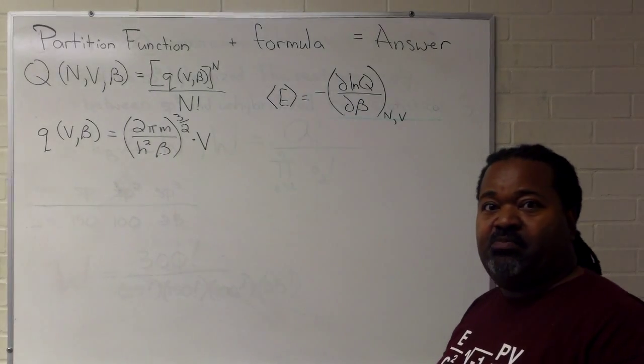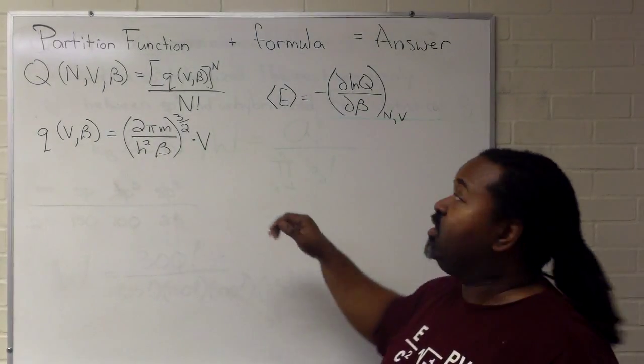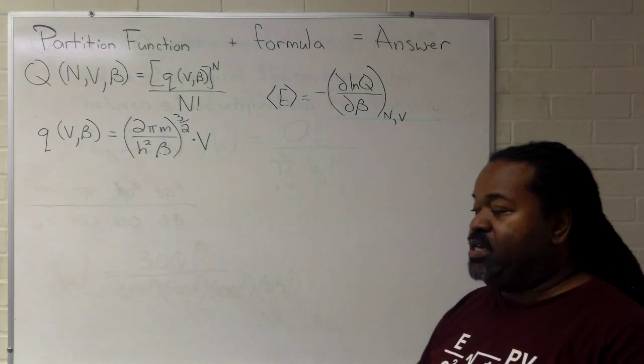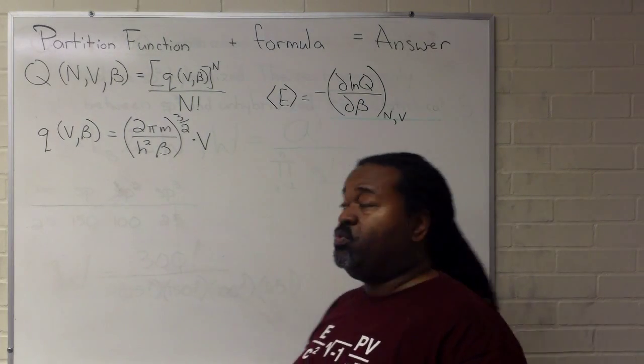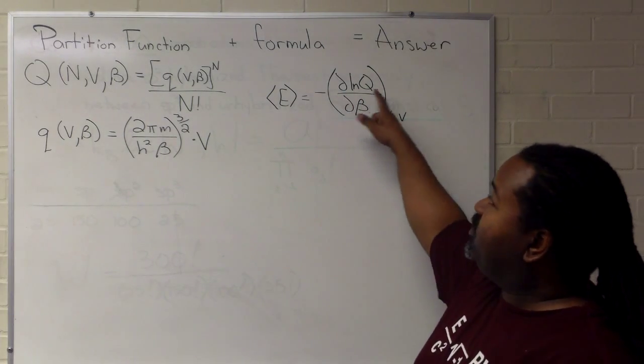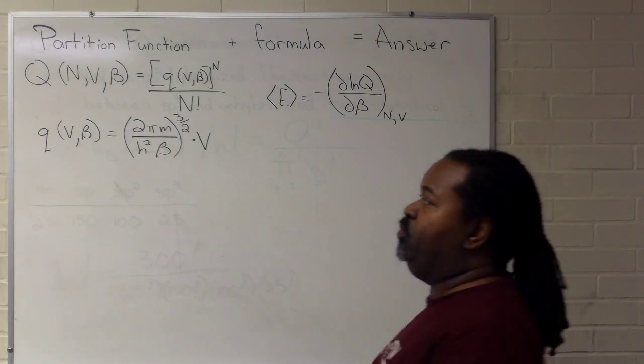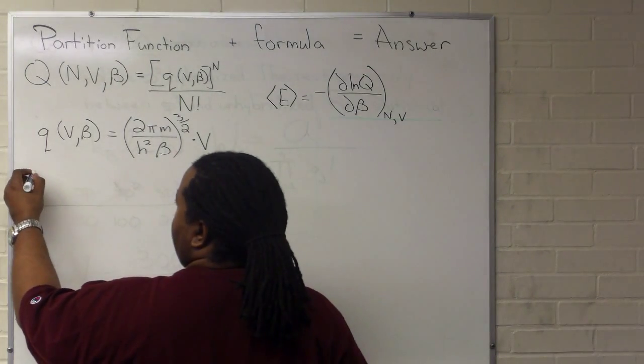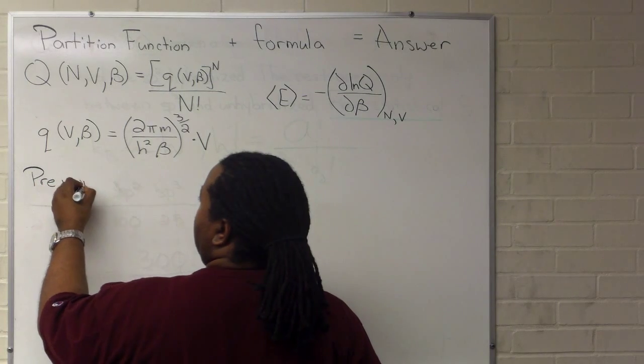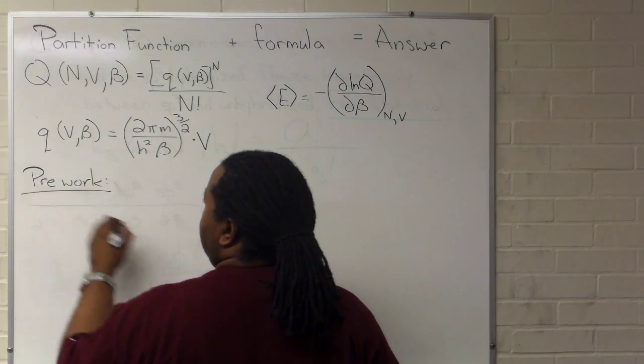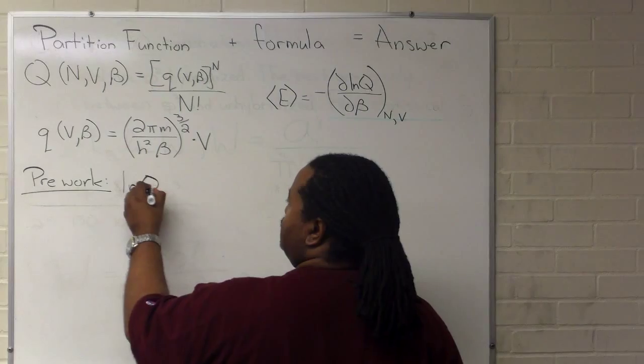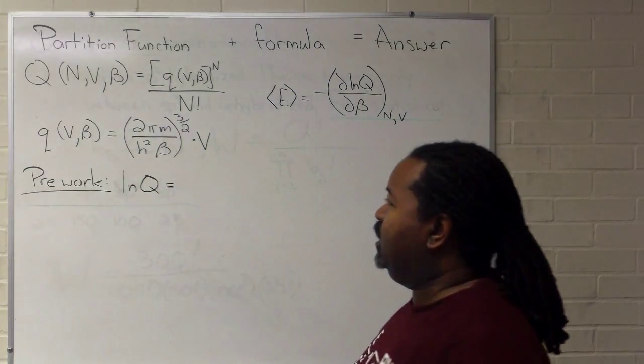So step one, recognizing that partition function, we've got that, a formula, we've got that, we'll yield an answer. We have to do what I like to call pre-work. Because the derivative is of ln of big Q, for the pre-work, what we want to do is figure out a better way of writing out ln of Q.